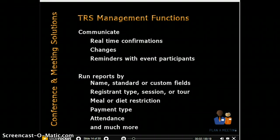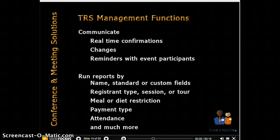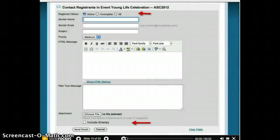So now you're curious about the legendary TRS management features. You've likely heard about the robust communications platform that keeps you in continuous conversation with your registrants. And reports? Just name the parameters or fields you want to sort by, and with a click you have the information that you seek. The email platform allows you to pick and choose your audience by registrant type, by activity group, by zip code, or by incomplete registrations.